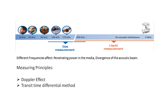For lower frequencies, there is higher penetrating power but the beam will be more diverged, which causes unnecessary reflections. For higher frequencies, the penetrating power is less but the beam is very focused, which removes unnecessary reflections.